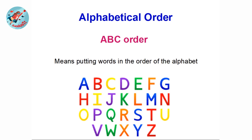When you open a dictionary, in the beginning pages you can find the words starting with the letters A, B and C. And also in the last pages of the book, you can find words starting with X, Y, Z. Think of a word starting with the letter O — like 'orange' — you may find that word in the middle pages of the book.